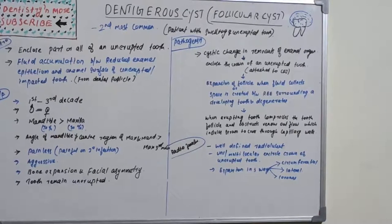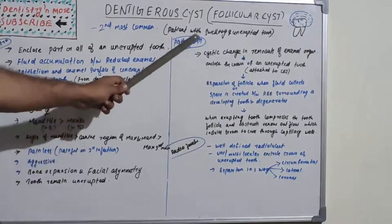It is usually a painless condition, but becomes painful when there is secondary infection. It is an aggressive lesion that grows aggressively. There will be bone expansion and facial asymmetry because it's affecting mostly the mandibular posterior region. The tooth remains unerupted because the cyst is over the tooth crown connecting to the cemento-enamel junction.